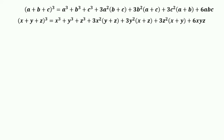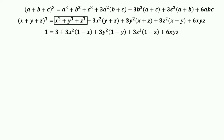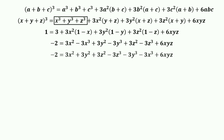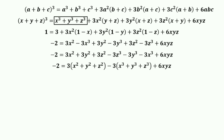Now using the (a+b+c)³ identity and substituting a, b, c by x, y, z, we get this expression. x³+y³+z³ is 3 as given. Substitute y+z with 1 minus x, x+z with 1 minus y, and x+y with 1 minus z. After some substitution and making pairs of terms, we get negative 2 equals 3 times (x²+y²+z²) minus 3 times (x³+y³+z³) plus 6xyz.